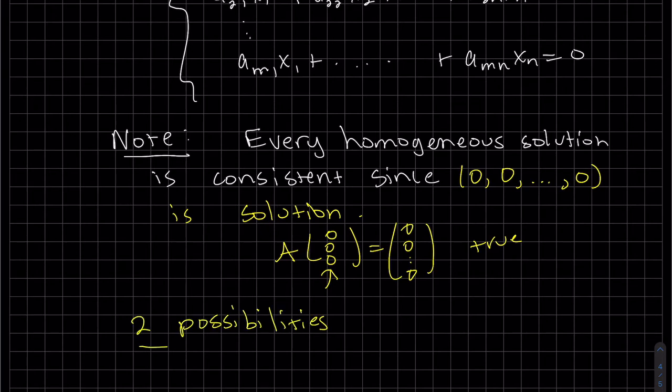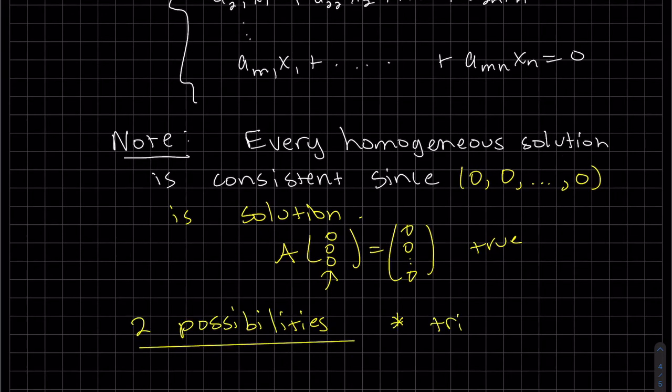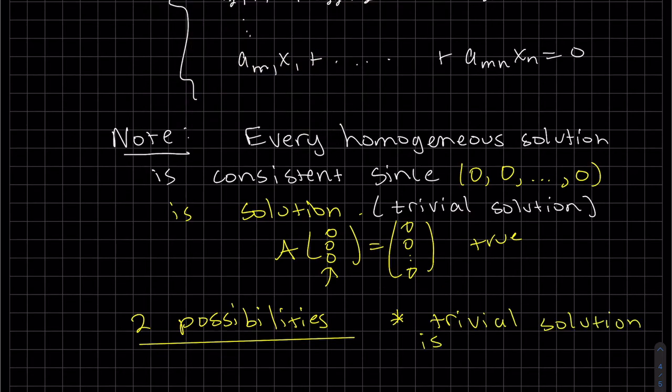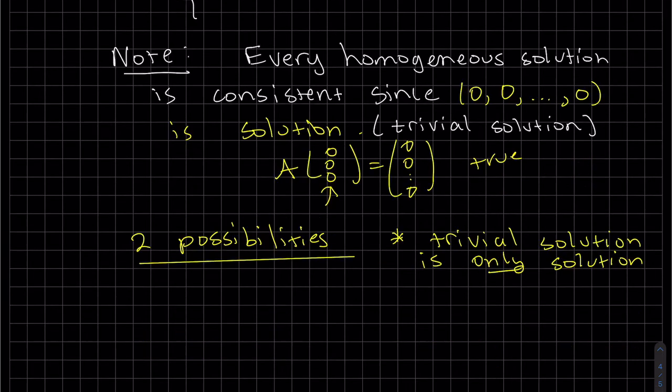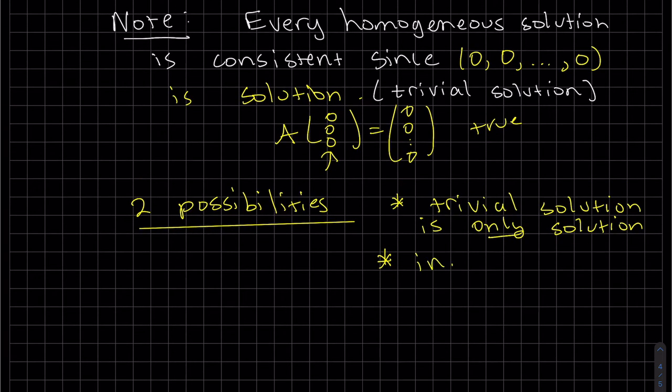So if that's true, there's two possibilities. By the way, this is called the trivial solution. Like it's obvious, it's trivial. So the trivial solution is the only solution, is one possibility. And what's our last possibility? Either have one solution, zero, or infinite. Well zero is not a possibility, so it would have to be infinite. There's another possibility, but that's it, just those two possibilities. And that would include trivial.